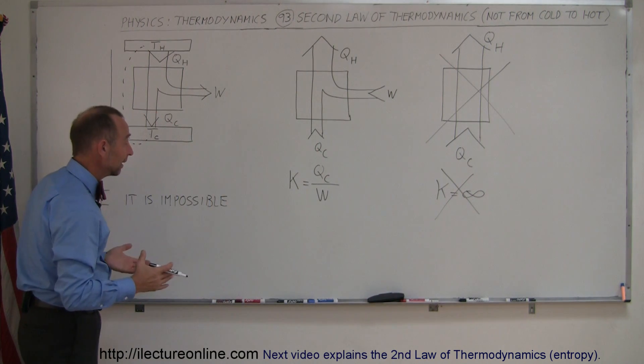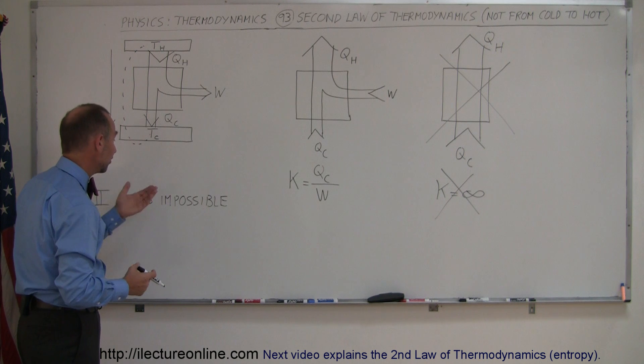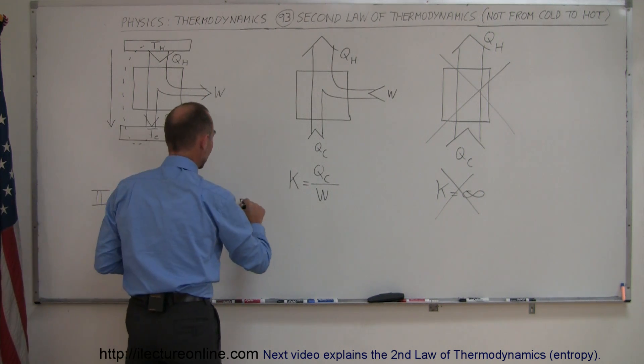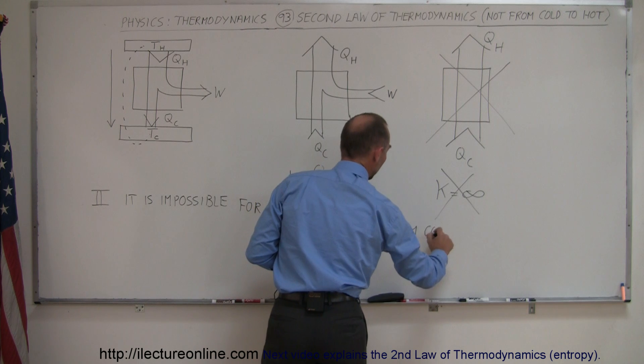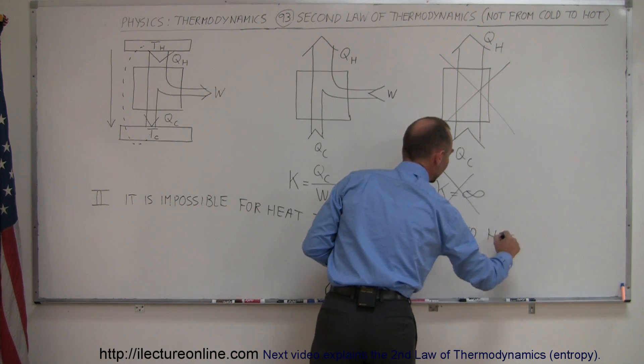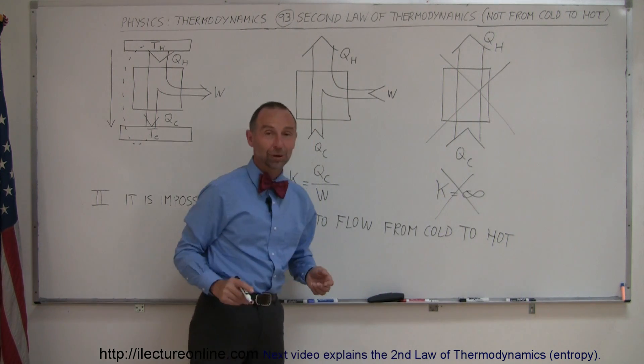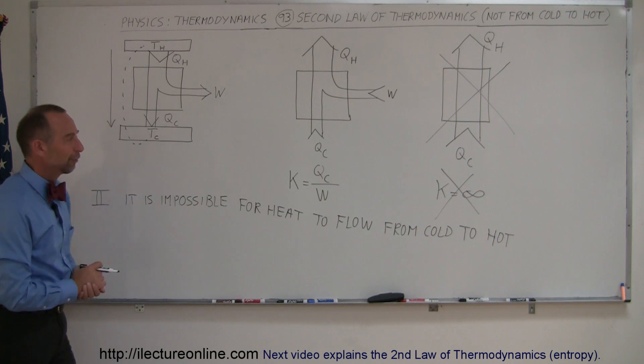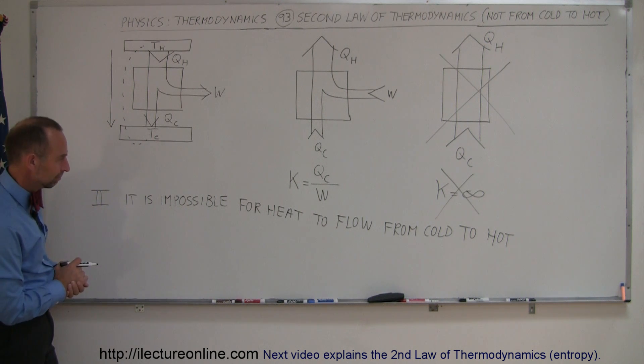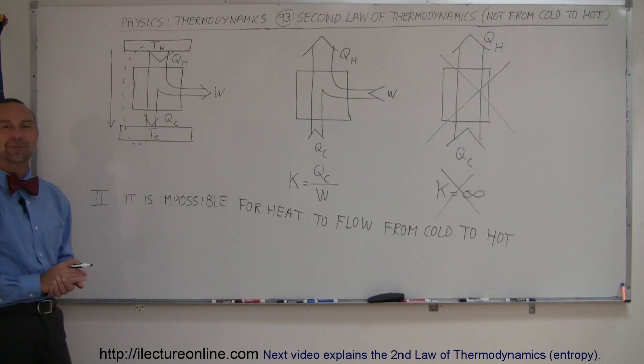So, to write it in the English language, you can say it is impossible for heat to flow from cold to hot. And that is another way of looking at the second law of thermodynamics. Not quite straight, but you get the picture.